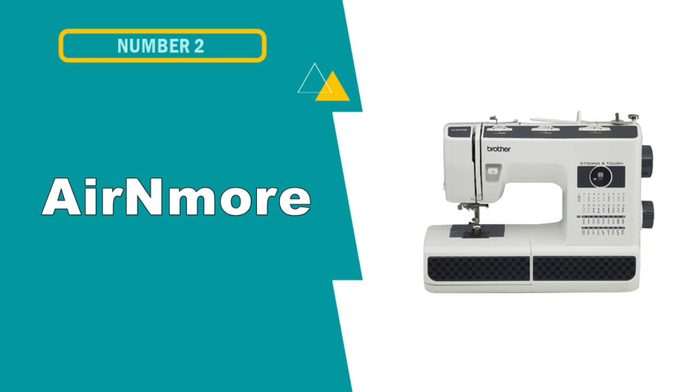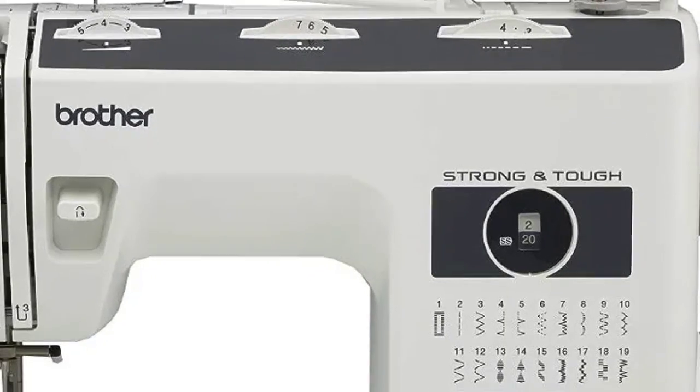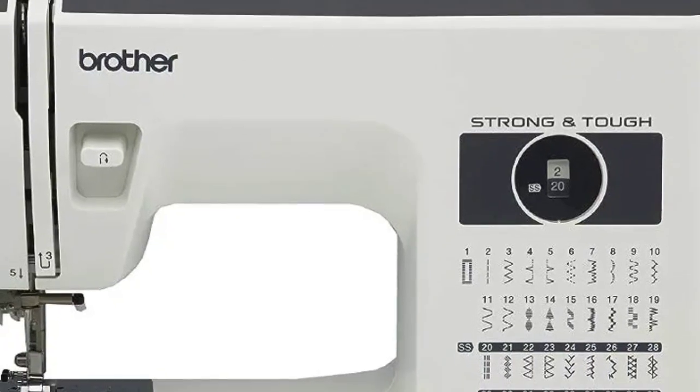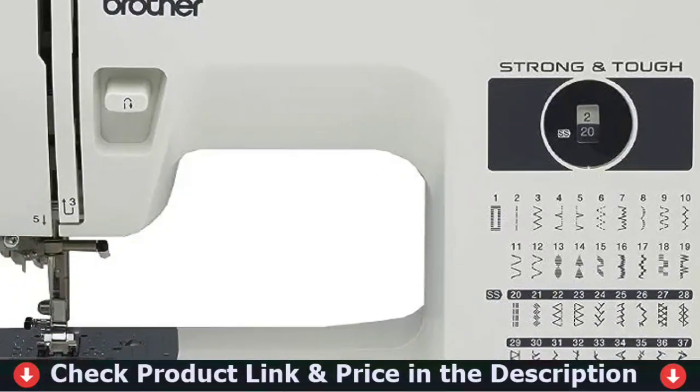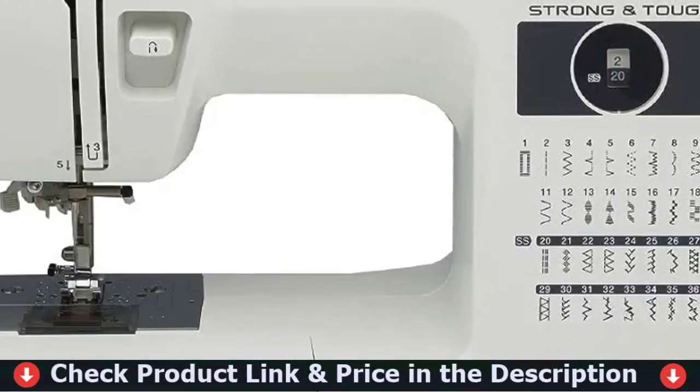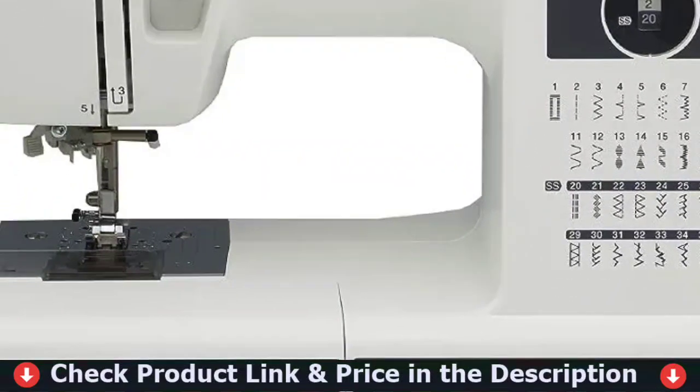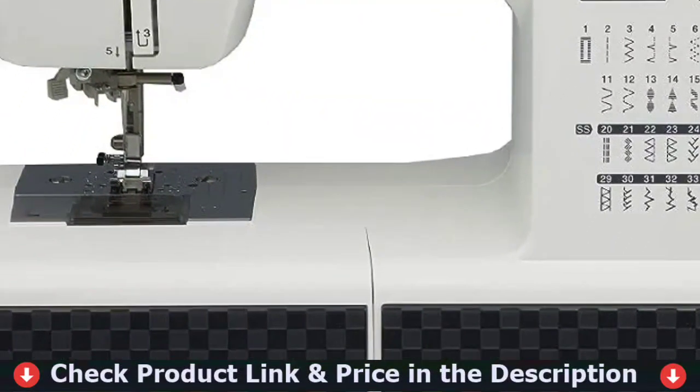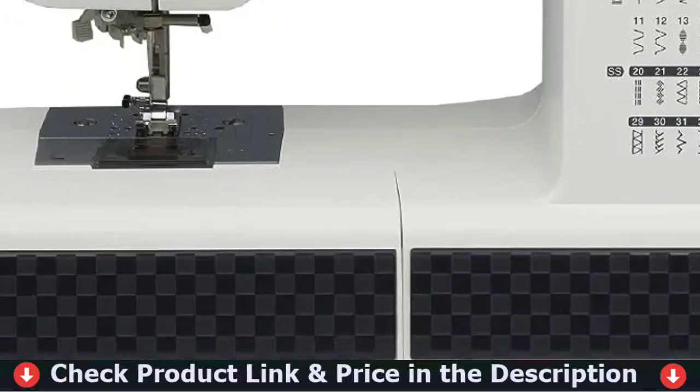Number 2 in this best home-use sewing machine list is Brother ST371HD Sewing Machine. The Brother ST371HD features 37 built-in stitches including an autosized buttonhole. This sewing machine includes an automatic needle threader that perfectly pushes the thread through the needle and a convenient, jam-resistant drop-in top bobbin.